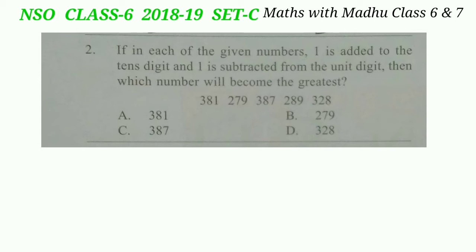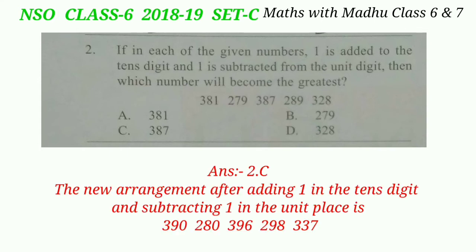Question 2: if in each of the given numbers one is added to the tens digit and one is subtracted from the unit digit, then which number will become the greatest? The numbers are 381, 279, 387, 289, and 328. After adding one to the tens digit and subtracting one from the unit digit, the new arrangement becomes 390, 280, 396, 298, and 337. So 396 is the largest number.